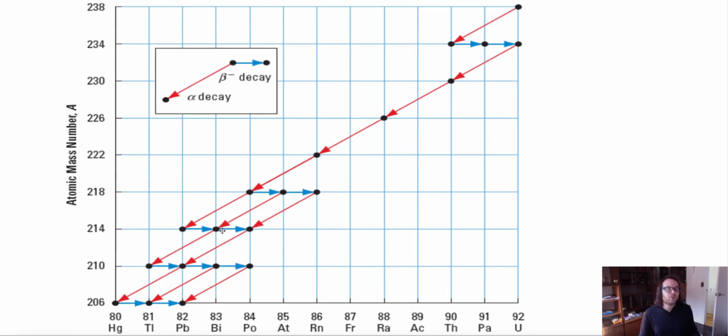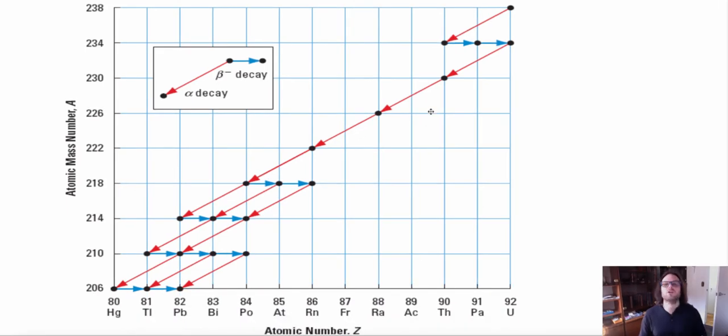And so if we see this, there are many paths they could take to get to our final end product of stability, which will be lead-206. We could also have something called a chain reaction effect.